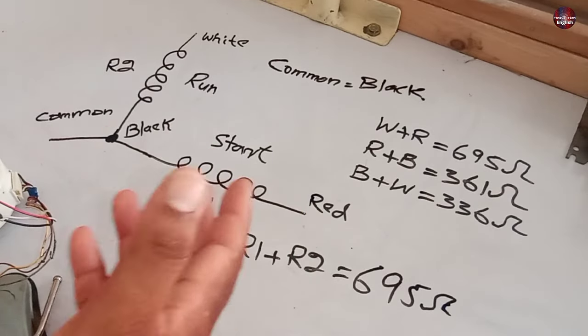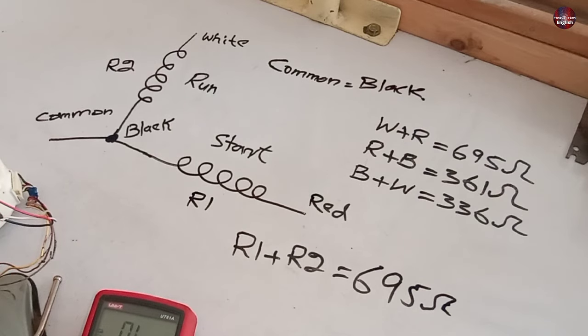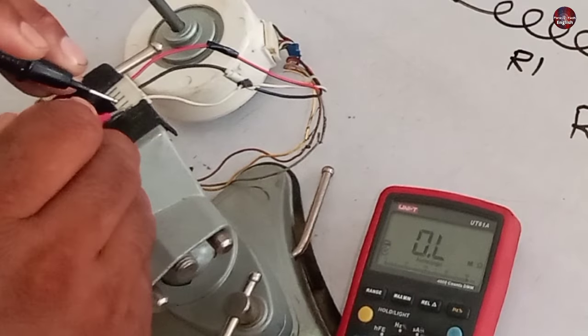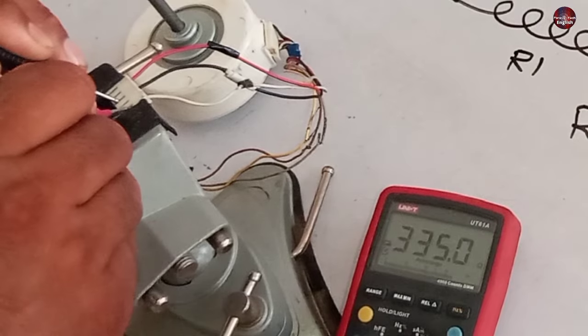Now we will find the running and the starting points. We already know what is the running and the starting point right now. But in case we don't know, then how will we find the running and start wires? For that, when I am checking the black and white wires, the multimeter is approximately showing 336 ohms.